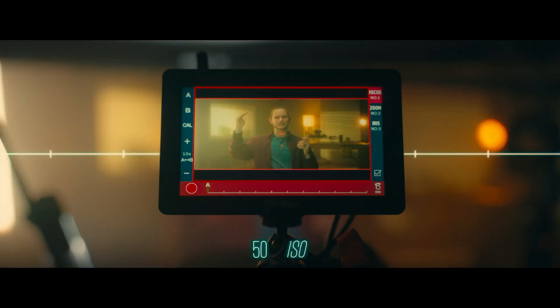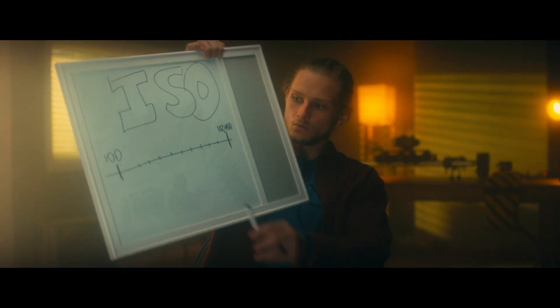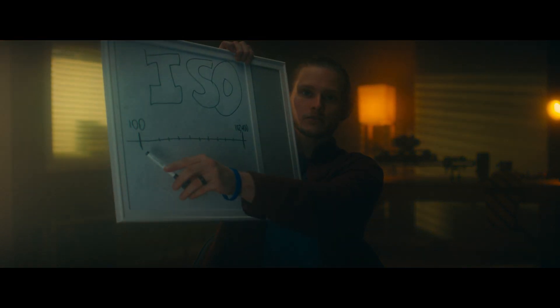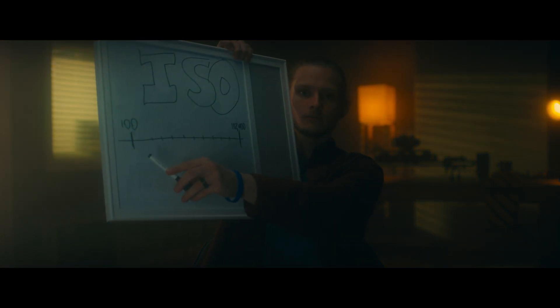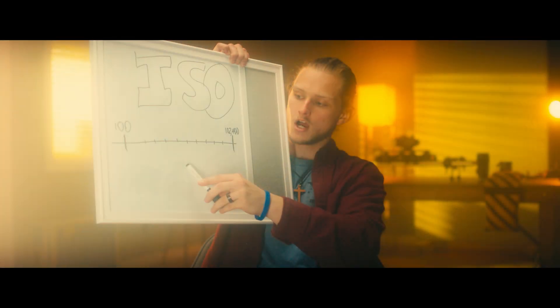Unlike aperture, with ISO the higher the number gets, the brighter your image gets. It's confusing, I know. I don't know why they do it to us, but they do. For example, ISO 100 will be a lot darker than if we were to go to ISO 2400.